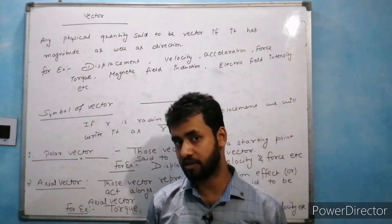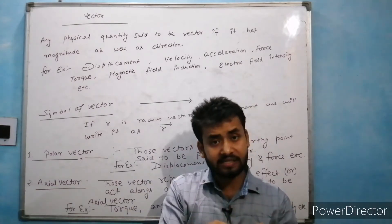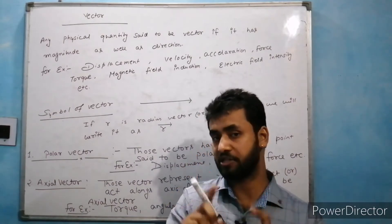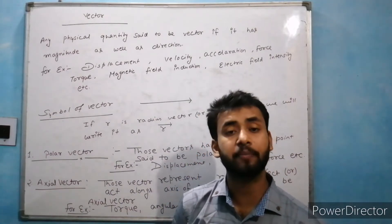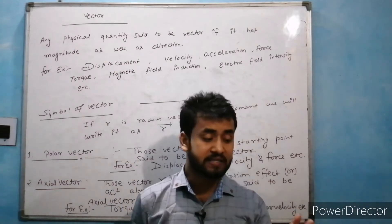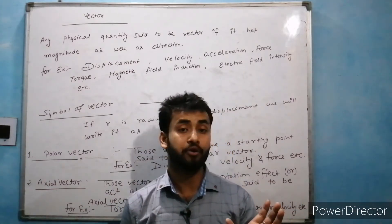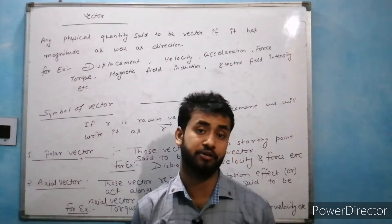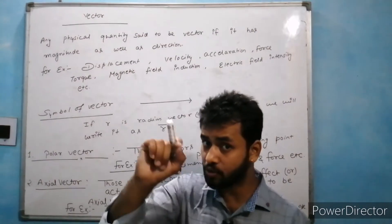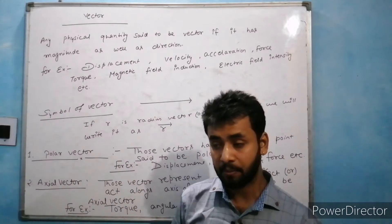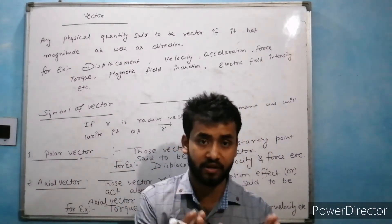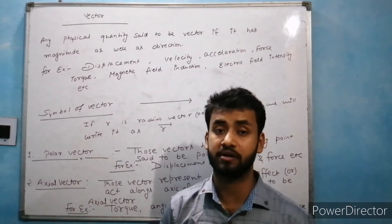If there is both distance and direction, then you have two physical quantities: scalar and vector. Scalar quantities are those represented only by magnitude, and vector quantities are those represented by magnitude as well as direction. If you have a specific direction, then you will have a vector quantity.